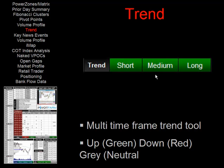We also have at the bottom of the sheet a trend indicator. It uses a traffic light system where green is bullish, gray is neutral, and red is bearish. We use multiple time frames: short, medium, and long. Short term is around one to two days, medium is three to four days or anything up to a week, and long is around two weeks.